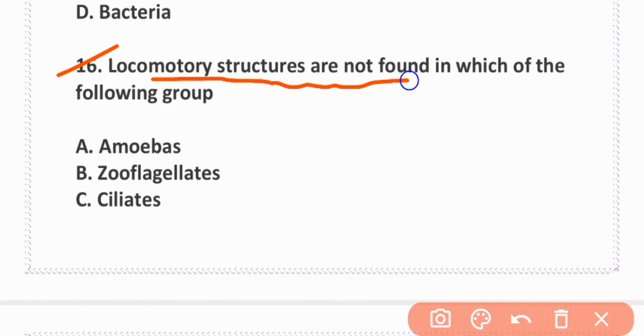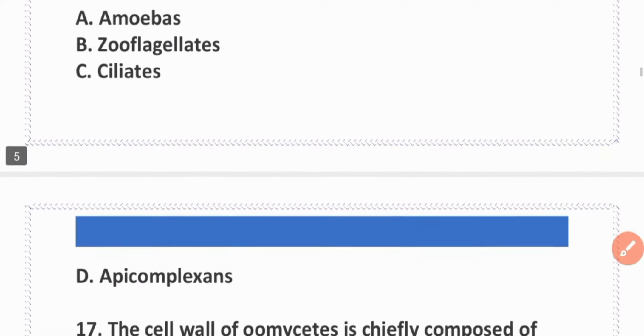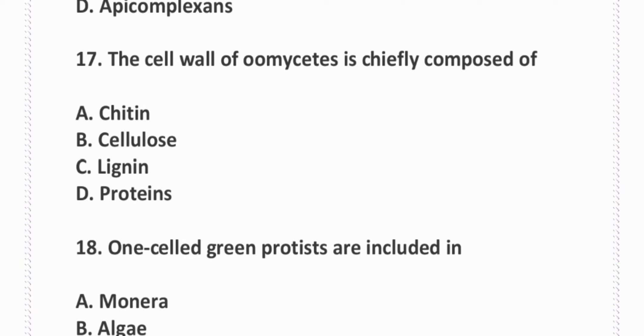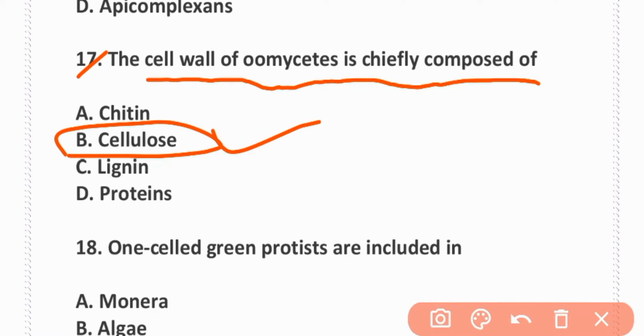Locomotory structures are not found in which of the following groups? Apicomplexans. D is correct. Cell wall of all fungi is heavily composed of cellulose. Option D is correct.